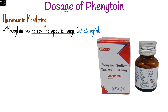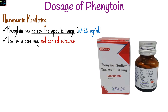Phenytoin levels in the blood must be monitored because of its narrow therapeutic range of 10–20 micrograms per milliliter. Too low a dose may not control seizures, while too high a dose can cause toxicity.